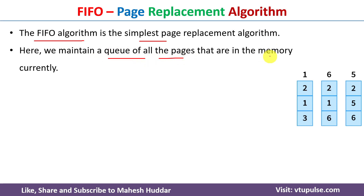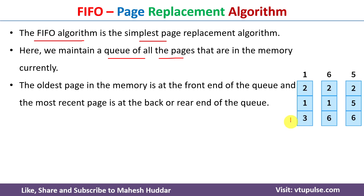Here we maintain a queue of all pages that are currently present in the memory. Let's assume that this is the current situation: for a particular process, three frames were allocated and pages 2, 1, and 3 are present in the primary memory. Page 3 is the oldest page which has entered the primary memory, hence it will be present at the front end of the queue. The most recently entered page will be present at the rear end of the queue.